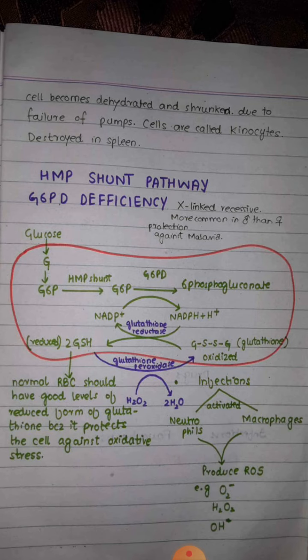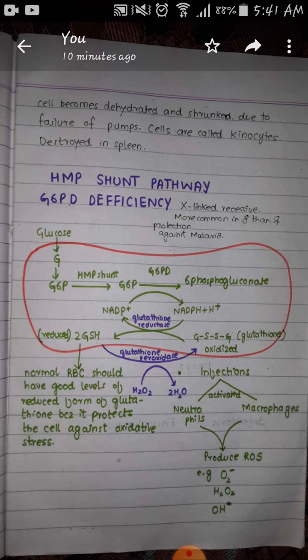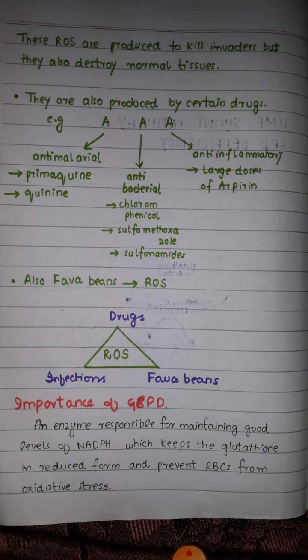In our body, reactive oxygen species are produced for many reasons. For example, during infection there is activation of neutrophils and macrophages, which produce reactive oxygen species — such as superoxide, hydrogen peroxide, and hydroxyl groups — to provide protection against infections. Certain drugs also produce reactive oxygen species; these are called triple-A drugs. Number one, we have anti-malarial drugs.